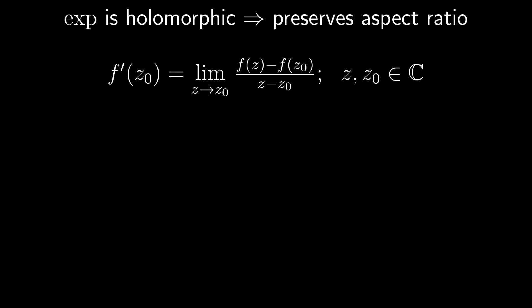For complex numbers though this implies that the derivative is the same no matter where you approach z0 from. Assuming the derivative is non-zero, holomorphic functions preserve angles. Orthogonal lines stay orthogonal. But that was also the case in our first approach.